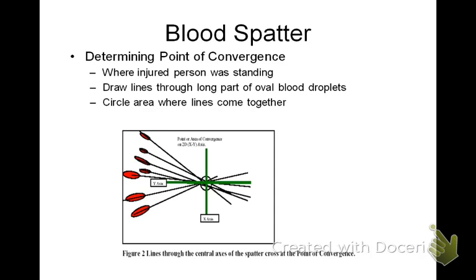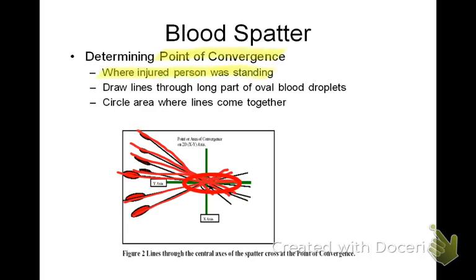In this case, lines are drawn through the long axis of the oval blood droplets, and they come together right about here — that's your point of convergence. What we're determining with point of convergence is where the injured person was standing when they started bleeding.